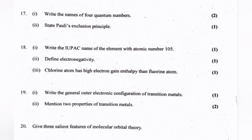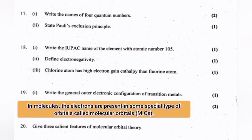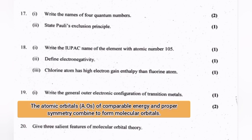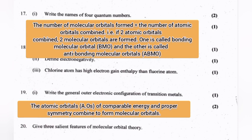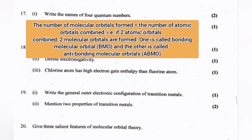Give three salient features of molecular orbital theory. In molecules, electrons are present in special orbitals called molecular orbitals. Atomic orbitals of compatible energy and proper symmetry combine to form molecular orbitals. The number of molecular orbitals formed equals the number of atomic orbitals combined. If two atomic orbitals combine, two molecular orbitals are formed: one bonding molecular orbital and one anti-bonding molecular orbital.